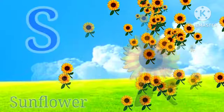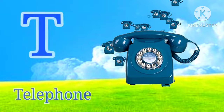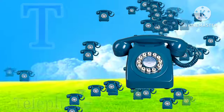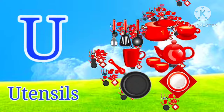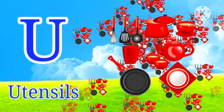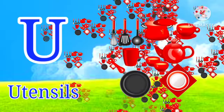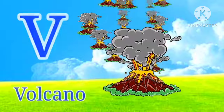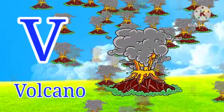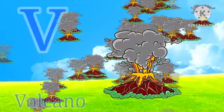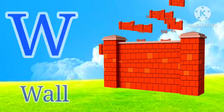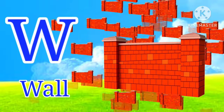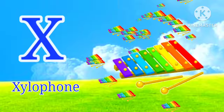S for Sunflower. Sunflower means Suri Mukhi. T for Telephone. Telephone means Telephone. U for Utensils. Utensils means Utensils. V for Volcano. Volcano means Jwala Mukhi. W for Wall. Wall means Dwar.